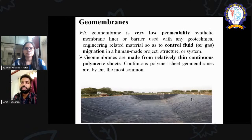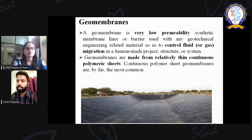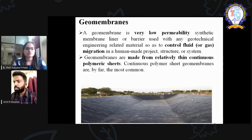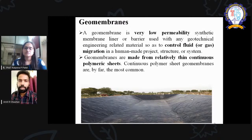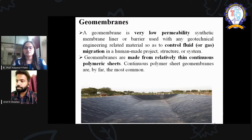Geomembranes are basically impervious, low-permeability materials. They are used to control fluid and gas transmission from one point to another. For example, in canal lining, this material acts as a lining that stops the migration or transmission of fluid, and that way we can easily stop erosion of the canal.